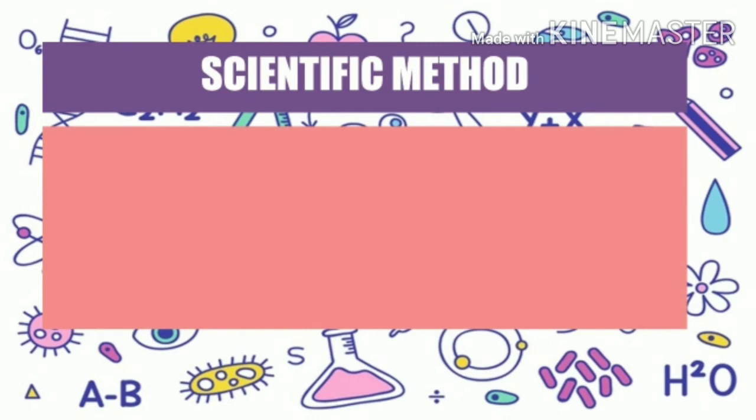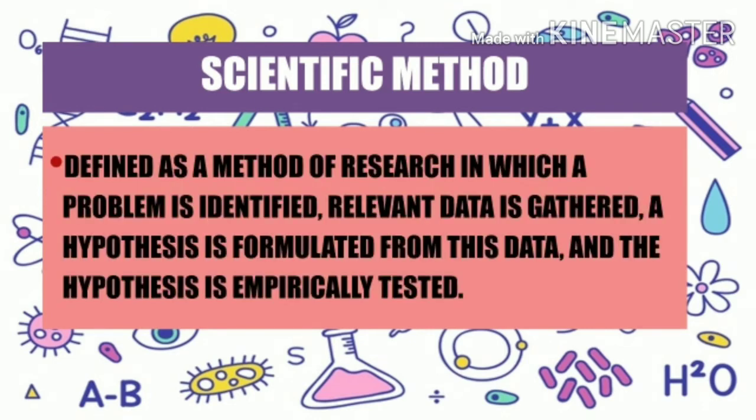What is the scientific method? The scientific method is defined as a method of research in which a problem is identified, relevant data is gathered, a hypothesis is formulated from this data, and the hypothesis is empirically tested. In simple terms, the scientific method is a process of identifying a problem and finding a solution based on facts.